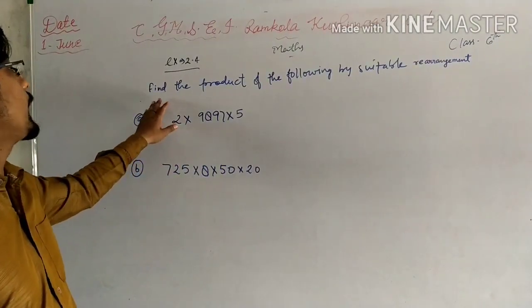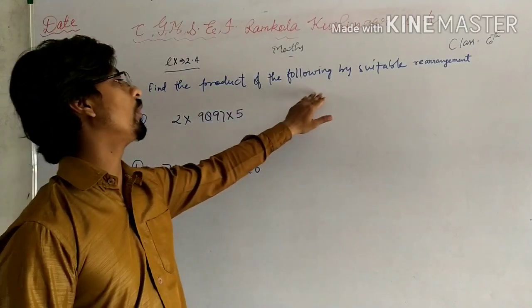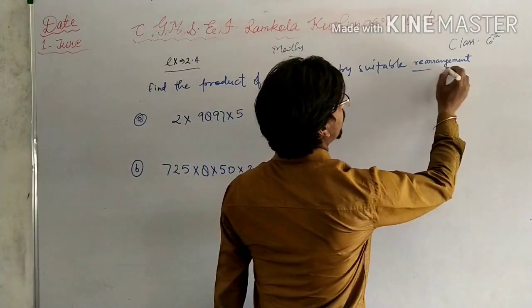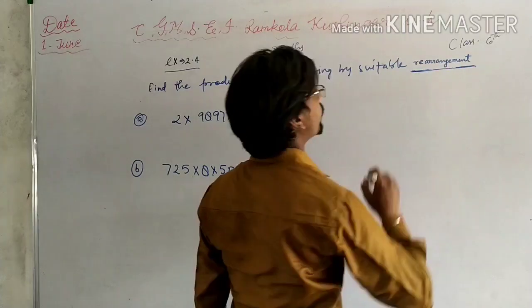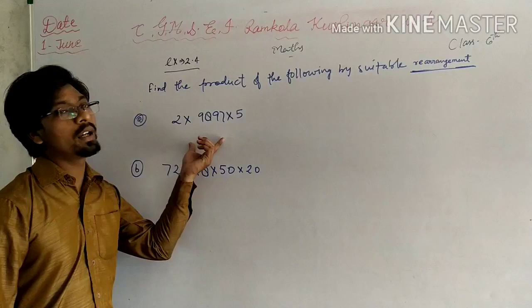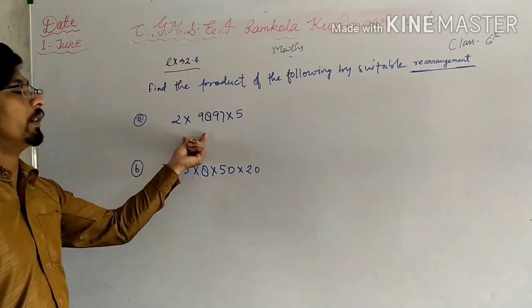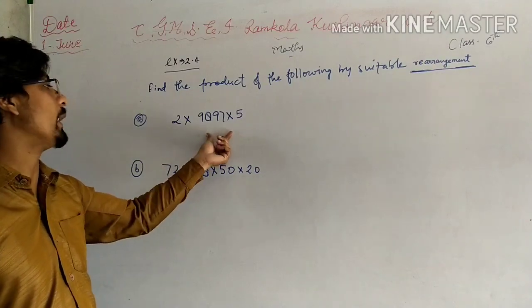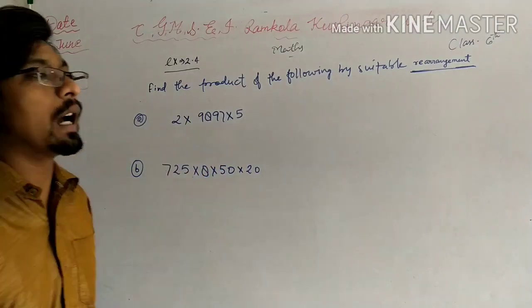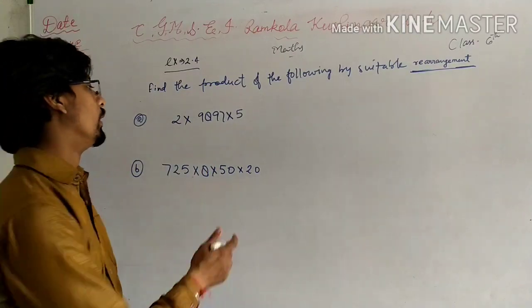In the next exercise, the question is: find the product of the following by suitable rearrangement. Look at here, this is the most important word in your question: rearrangement. It means we should arrange in a sequence which you can easily find the product. It means how can you find the answer in an easy way.